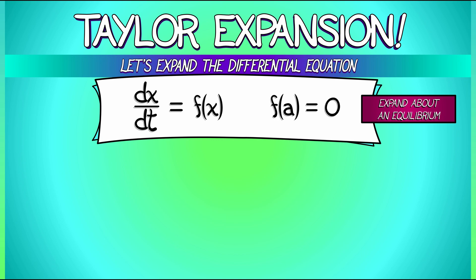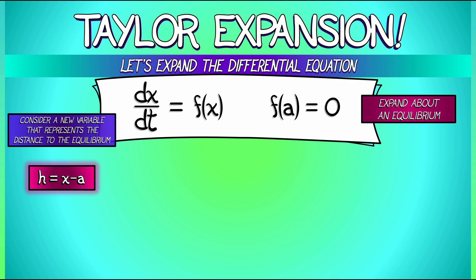Consider a new variable that represents how far away you are from equilibrium. Let's call it h. And let's declare h to be x minus a, the distance to the equilibrium.